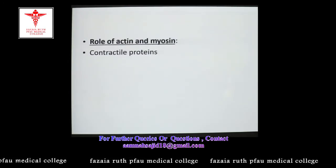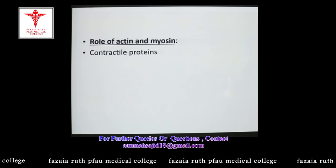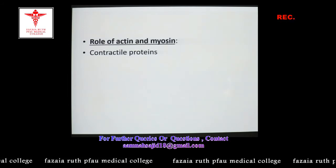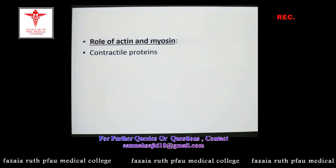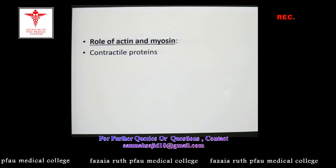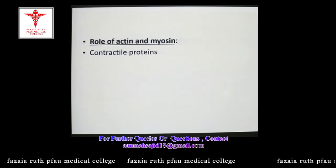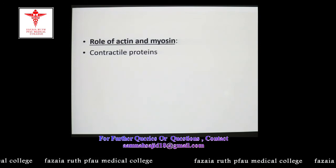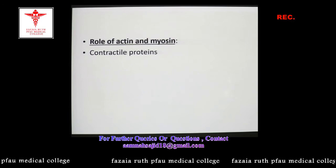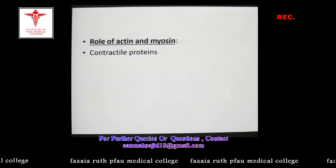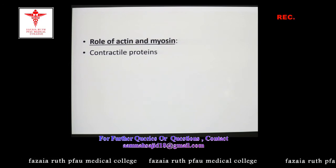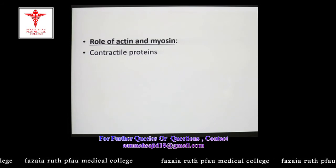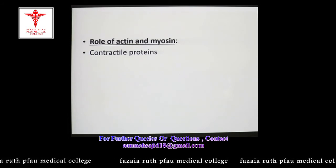Actin and myosin proteins are also fibrous proteins, and they are involved in the contraction of different types of muscles. In other words, actin and myosin are contractile proteins.